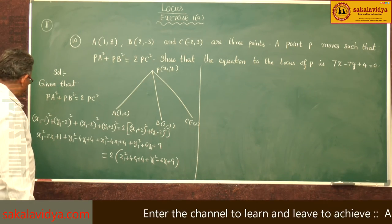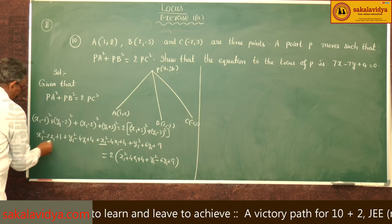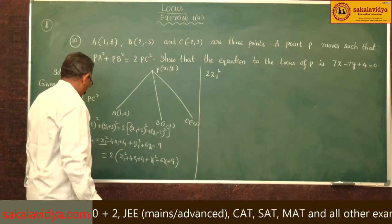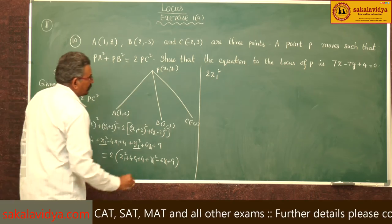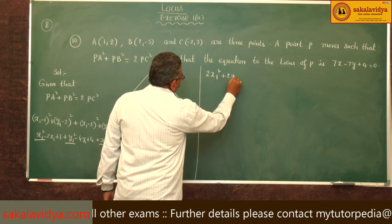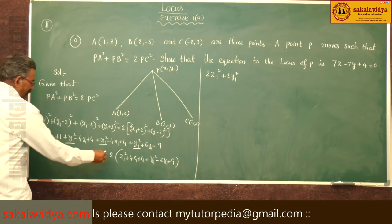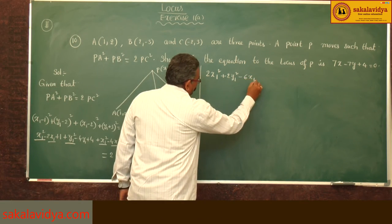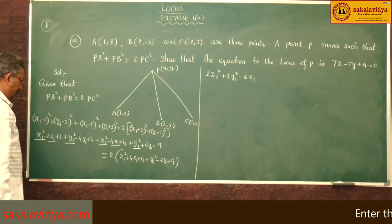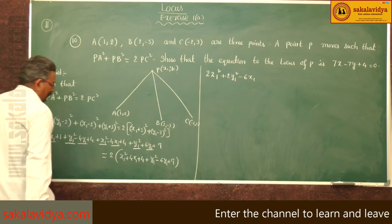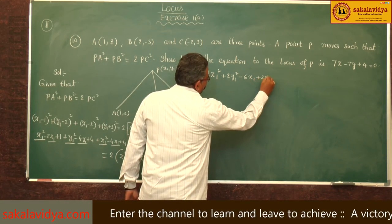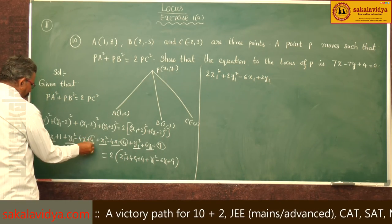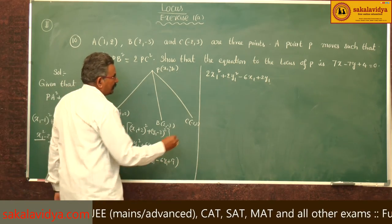Let us simplify: x₁² plus x₁² is 2x₁², y₁² plus y₁² is 2y₁². Next, -4x₁ - 2x₁ is -6x₁, then -4y₁ + 6y₁ is 2y₁, and 9 + 4 is 13, plus 4 is 17, plus 1 is 18.